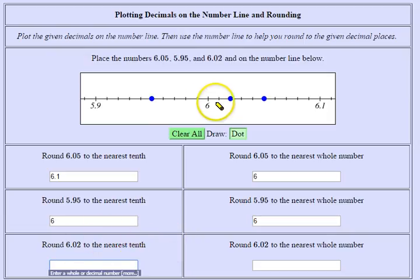And finally 6.02 to the nearest tenth. It's between 6 and 0 tenths and 6 and 1 tenth. Notice it's closer to 6 and 0 tenths.